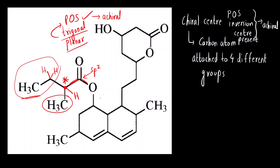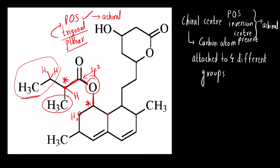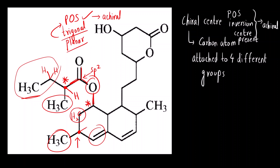Moving on to the next carbon: is it chiral? There is one oxygen, here we have a CH₂ group, here we have CH and the rest of the chain, and there is one hydrogen. So this is also a chiral center. Remember, in a fused ring system, the terminal carbons that are sp3 hybridized are generally going to be chiral. Let us verify: this carbon is attached to a methyl group, there is a double bond above, CH₂ above, and one hydrogen — so this is also chiral.